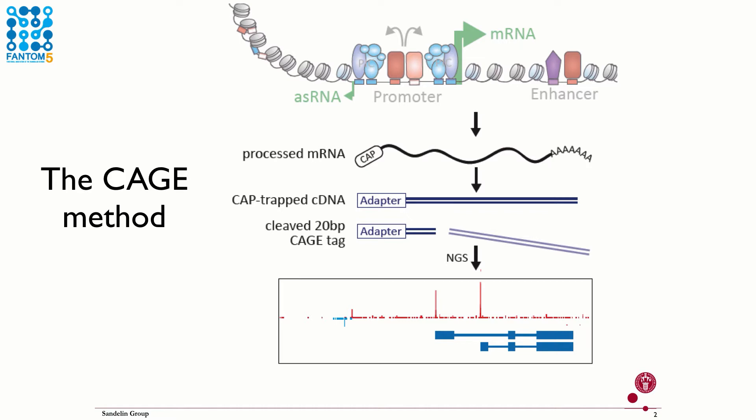The obtained CAGE tags are mapped back to the human genome, resulting in peaks at active transcription start sites. The number of tags mapping to a given TSS corresponds to its expression level, much like in RNA-seq. So we get both the location of promoters and expression level for the sample we perform CAGE on.